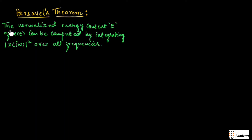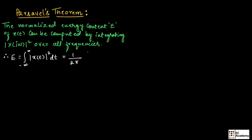Parseval's theorem states that the normalized energy content E of a continuous time signal X(t) can be computed by integrating the magnitude of X(jω) squared over all frequencies. Therefore, we can write energy E equal to the integration from minus infinity to infinity of the magnitude of X(t) whole square dt, which equals 1 by 2π times the integration from minus infinity to infinity of the magnitude of X(jω) whole square dω.